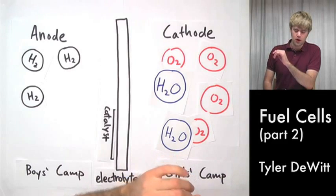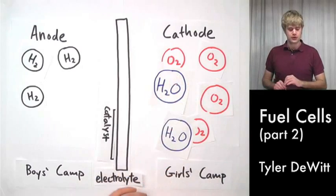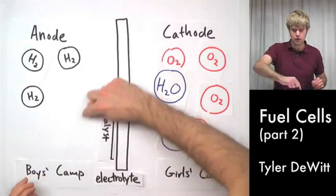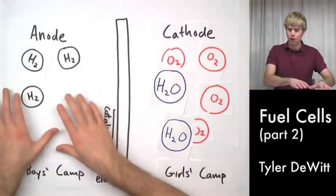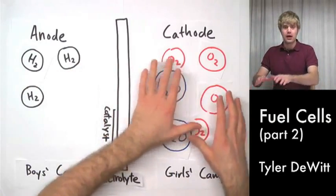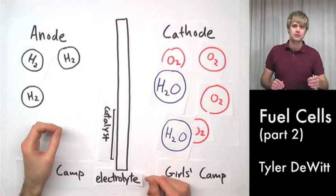So, just to review, fuel cells create water, a clean exhaust source, and they use the movement of electrons from anode to cathode, from the boys dorm to the girls dorm, in order to generate electricity. So, that's how a fuel cell works.